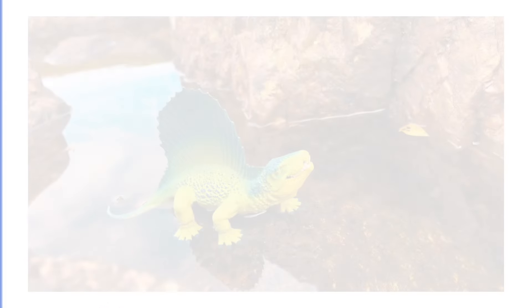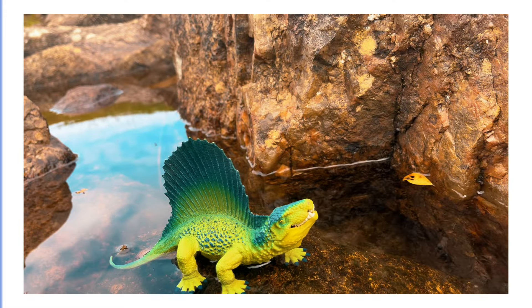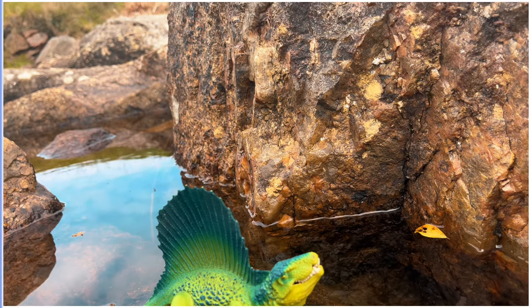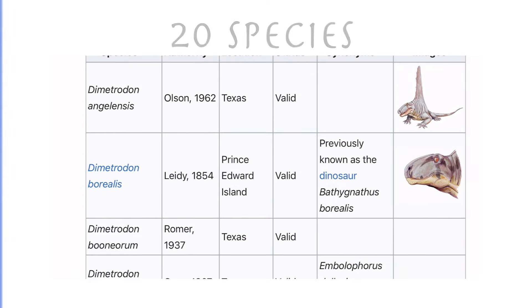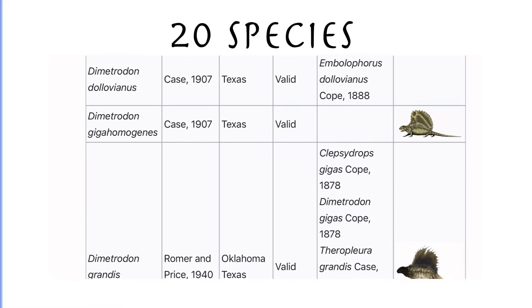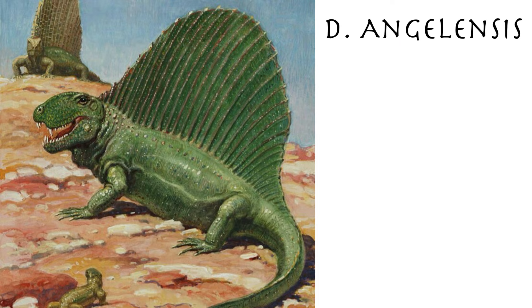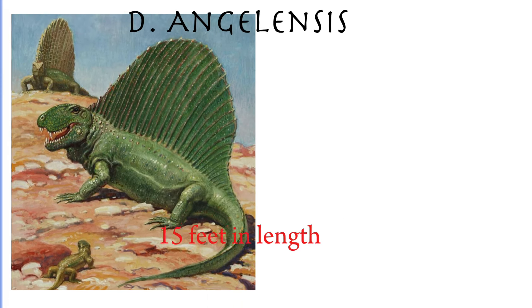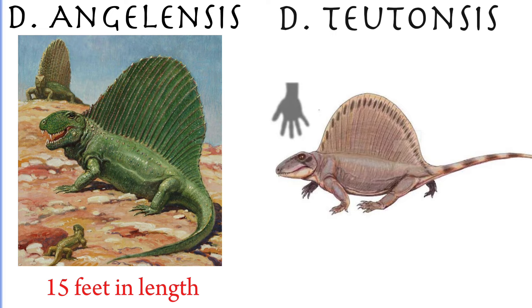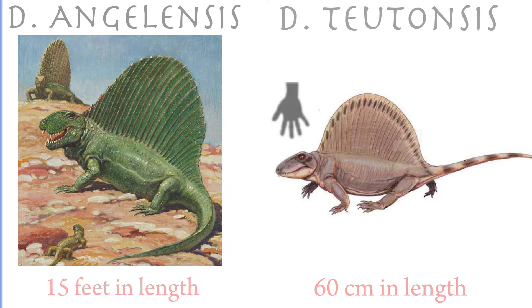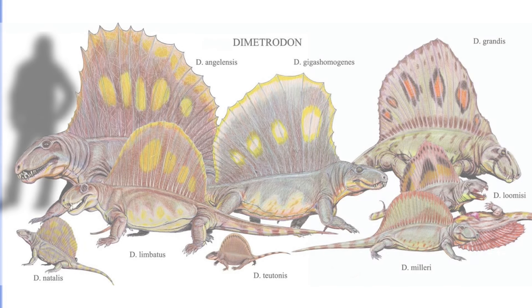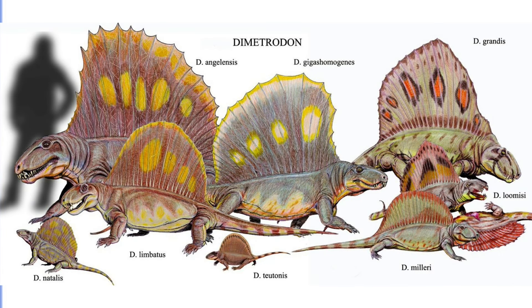It's interesting to think that Dimetrodon's fossils are just a remnant of the past. There are many different species of Dimetrodon, coming in many different shapes and sizes. The largest of these species is Dimetrodon angelensis, which was 15 feet in length. The smallest was Dimetrodon teutonis, which is just 60 cm in length. Here are some of the different species of Dimetrodon.